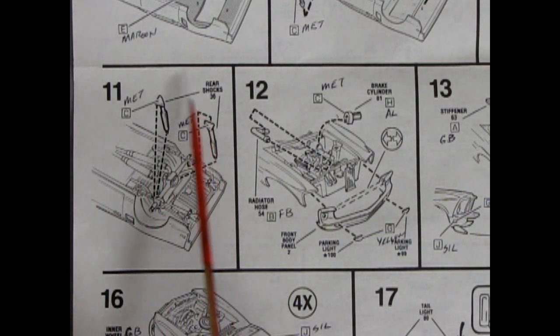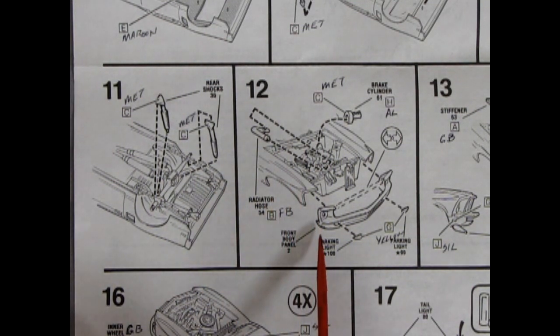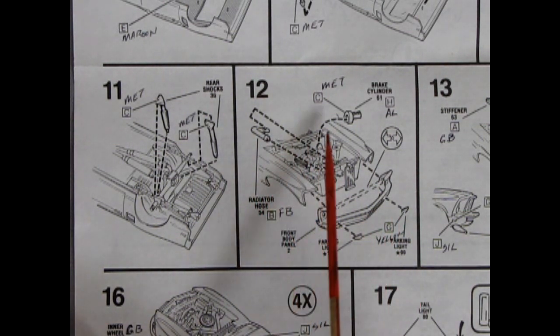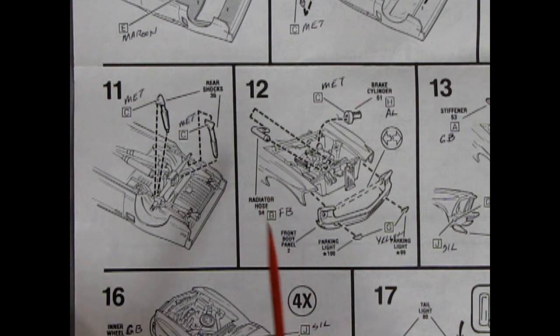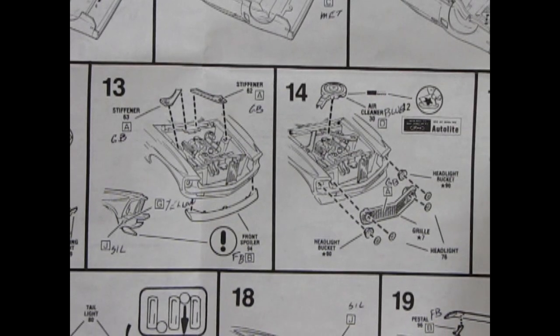Panel eleven shows our shock absorbers being glued in here off the rear axle. And twelve shows the front cowl being glued on with our parking lights. And then under the hood we've got our radiator hose, our brake master cylinder. All of this goes into this component here. And then we've got panel thirteen and fourteen.